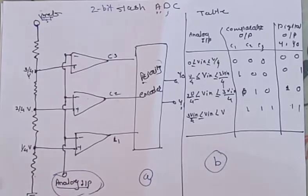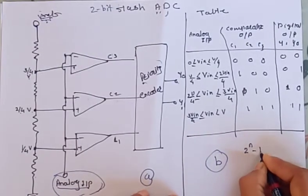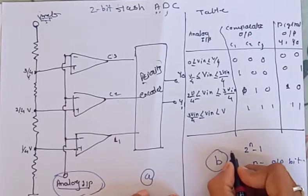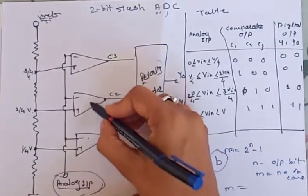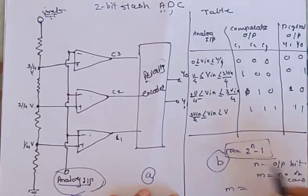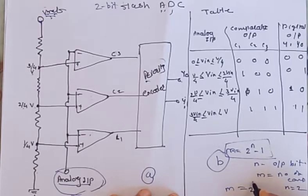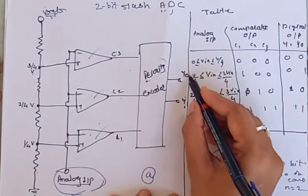When using a 2-bit converter you need 3 comparators. The relation is: m = 2^n − 1, where n is the number of output bits and m is the number of comparators. In our example, n = 2, so m = 2^2 − 1 = 4 − 1 = 3. So for a 2-bit output, we need 3 comparators.